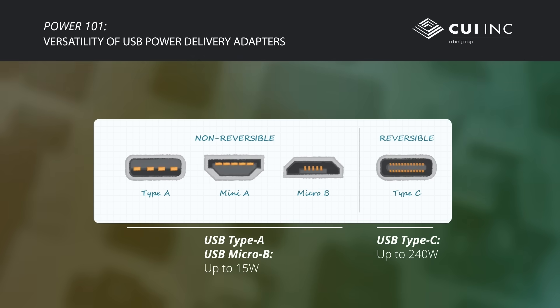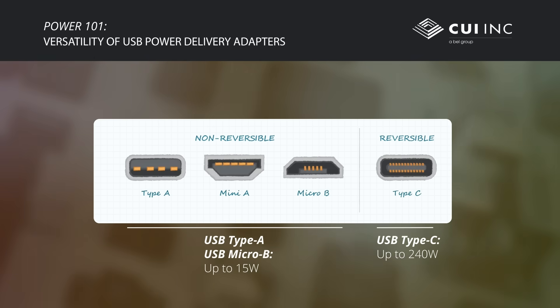The original USB 1.0 spec only allowed devices to draw 500mA at 5V. This increased over time, but with USB Type-C and Power Delivery 3.1, USB can now provide up to 240W.